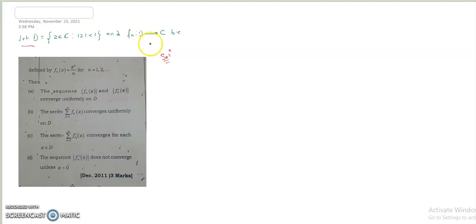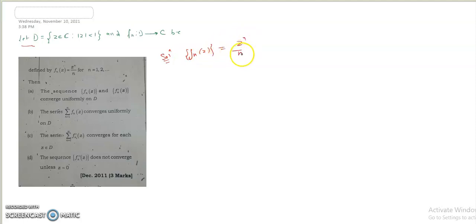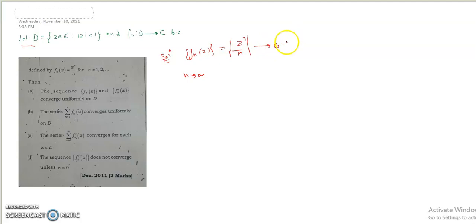Let's solve this. What is given here? fn(z) = z^n / n. We take n tending to infinity, because we are talking about uniform convergence. As n tends to infinity, z^n / n will go to 0, for all z belonging to D, the open unit disk.